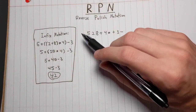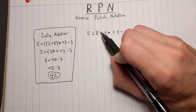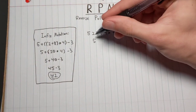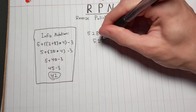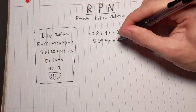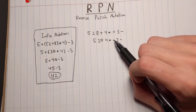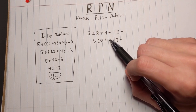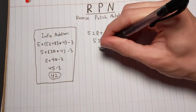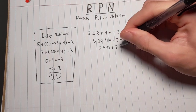So let's go ahead and solve this. Moving from left to right, when we get to the plus operator, we apply it to the two leftmost operands — 2 and 8 — giving us 5 and 10. Copying down the rest: 4, times, plus, 3, minus. Now we hit the multiplication symbol and multiply the two leftmost operands, 10 and 4, giving us 5, 40, plus, 3, minus.